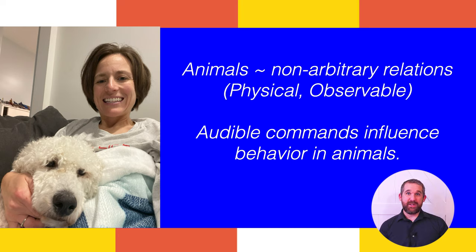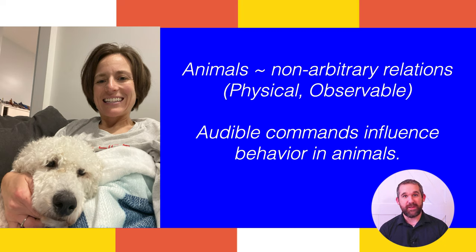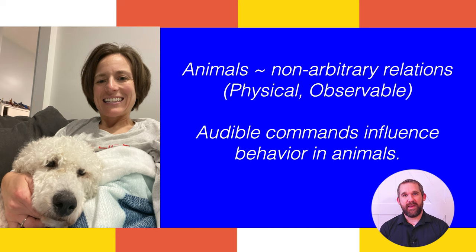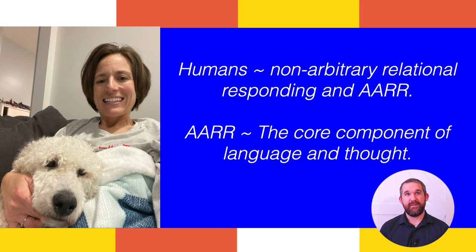Arbitrarily applicable relational responding appears to be an ability that animals and humans have demonstrated. However, relating things together is limited in animals, as they seem to only be able to relate non-arbitrarily, by their physical and observable characteristics. Our family has a new dog, and she understands commands like sit and shake, will come when we say 'come,' go to the door when we say 'potty,' or prepare for a treat when we say 'treat.' Animals are quite amazing in their ability to use relations to learn behavior, but they are limited to physical and observable characteristics.